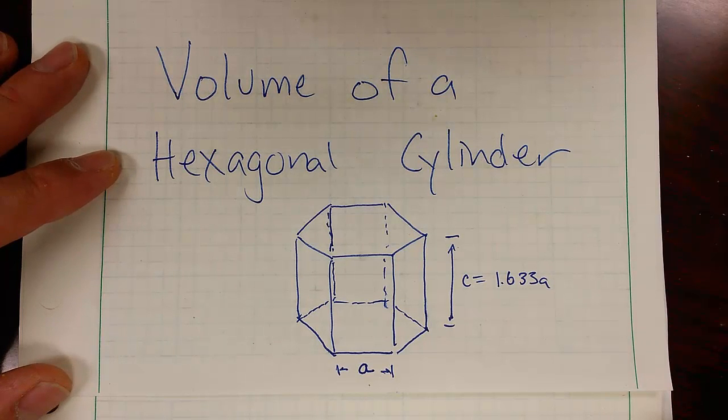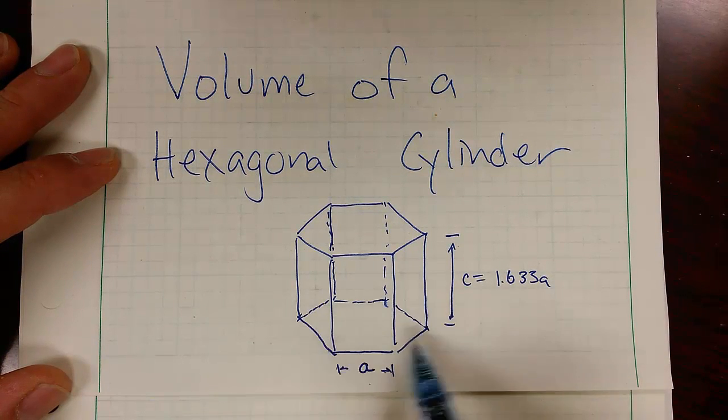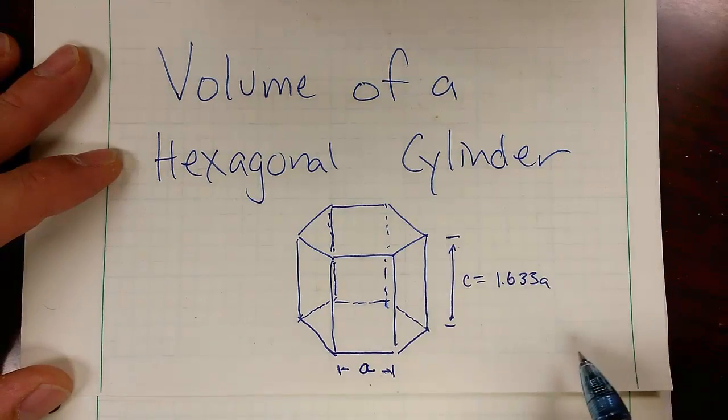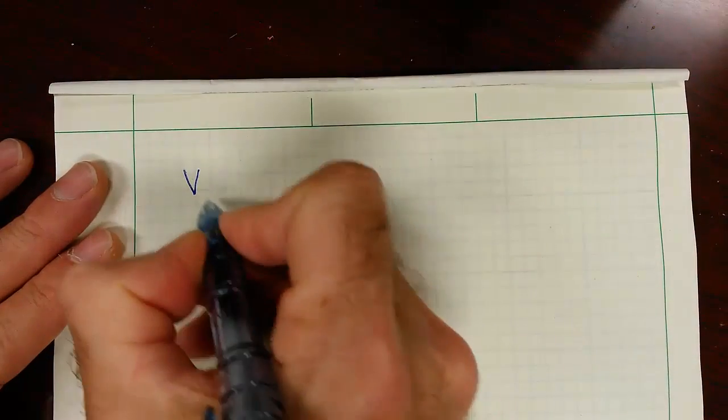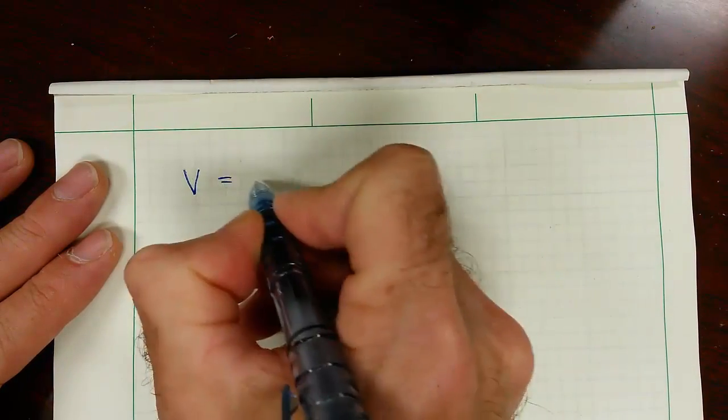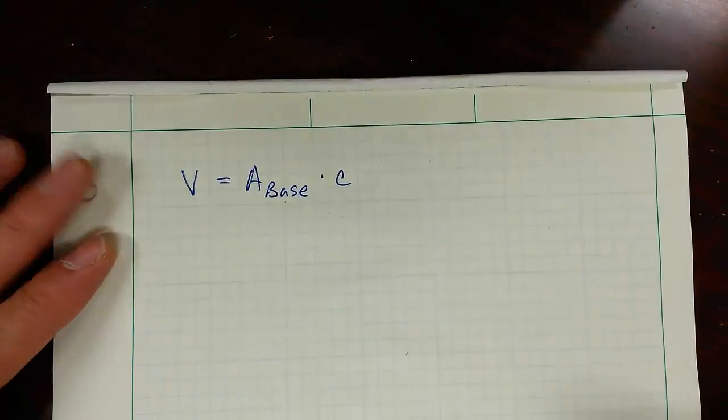So the way we're going to get started with this is we're going to find the area of the base and multiply that by the height, and that will give us the volume of the cylinder. So the volume is going to be the area of the base times the height c.